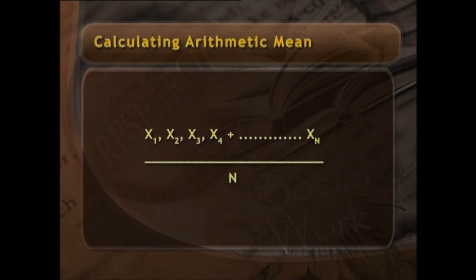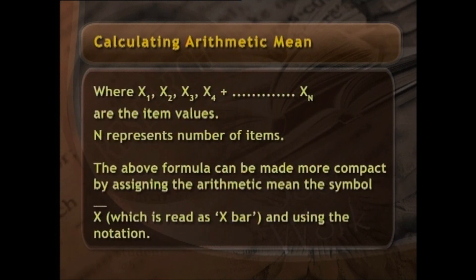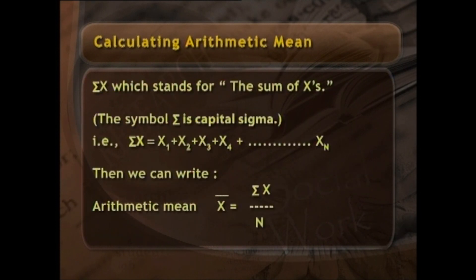The procedure for calculating the mean can be expressed algebraically as: (x1 + x2 + x3 + ... + xn) / n, where x1, x2, x3, ..., xn are the item values and n represents the number of items. This formula can be made more compact by assigning the arithmetic mean the symbol x̄ (read as 'x bar') and using the notation Σx which stands for the sum of x's. Then the arithmetic mean is written as: x̄ = Σx / n.